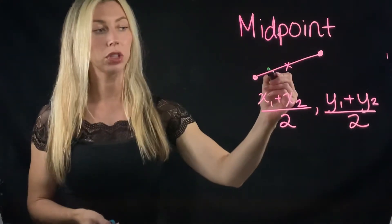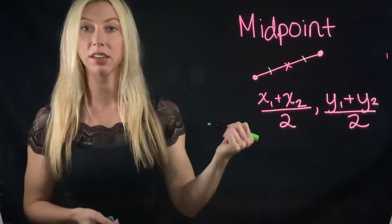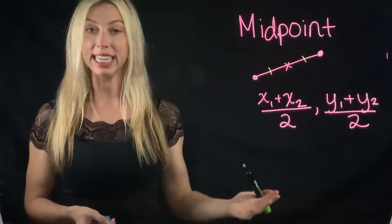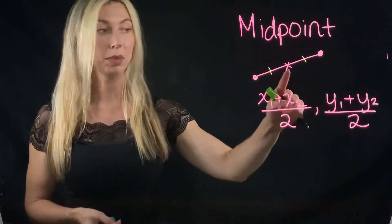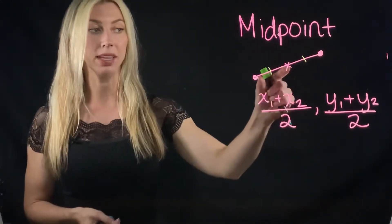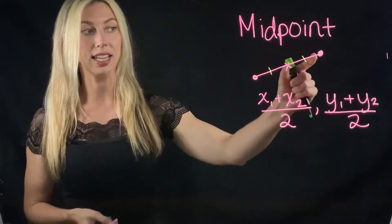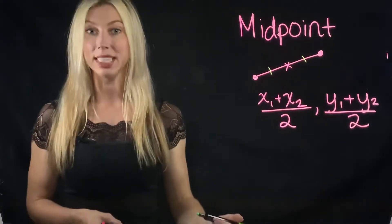So we usually use like one dash here and one dash here and that is really just to indicate that you have a midpoint in the middle, that these two segments from the end to the middle and from this end to the middle are equidistant.